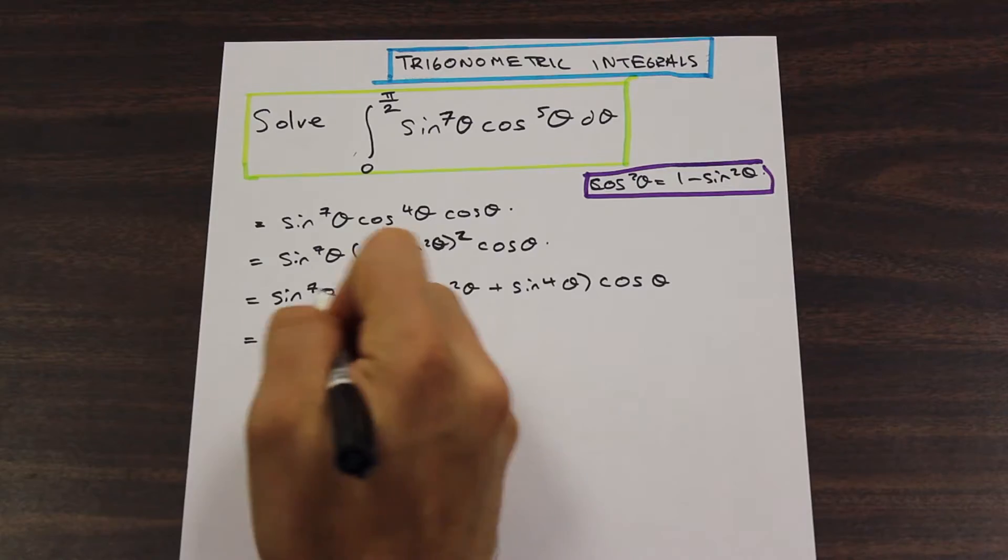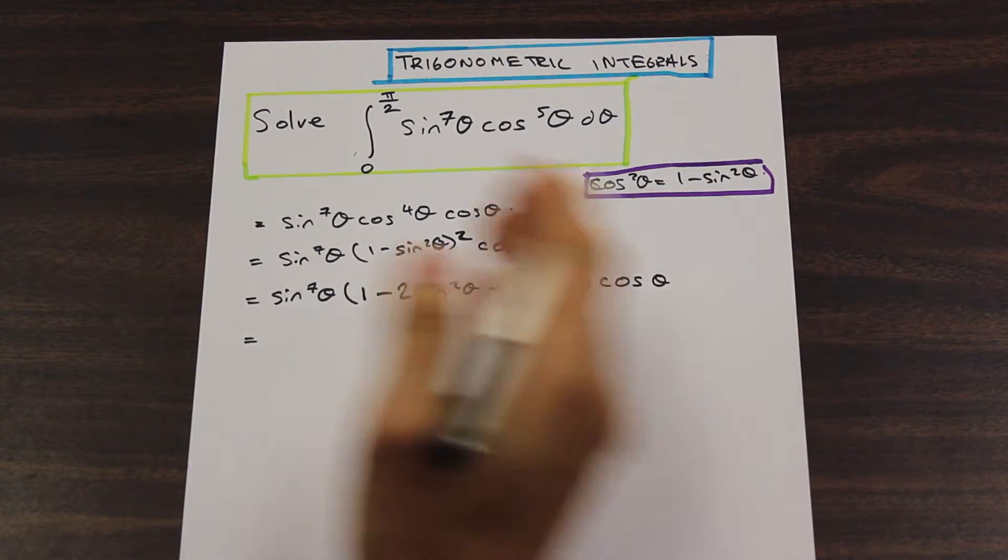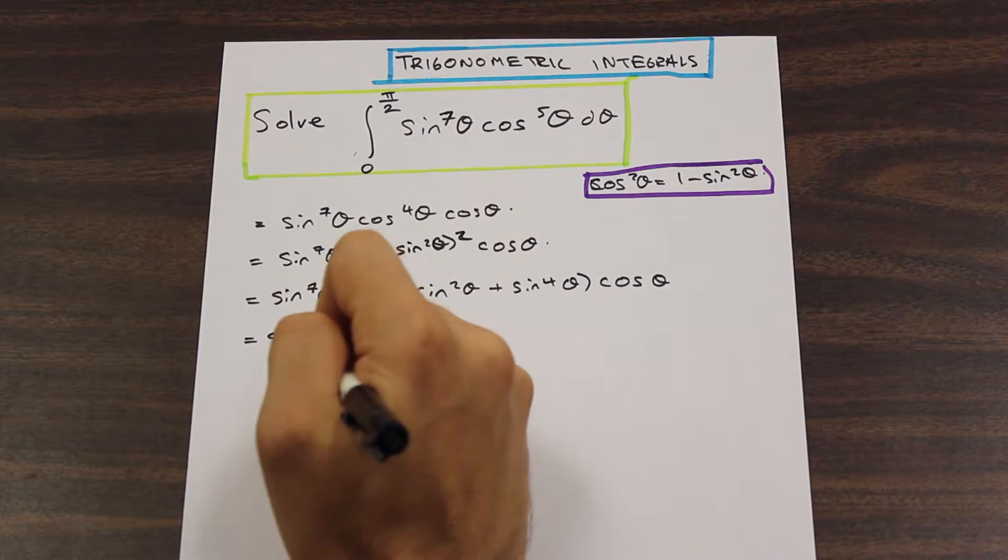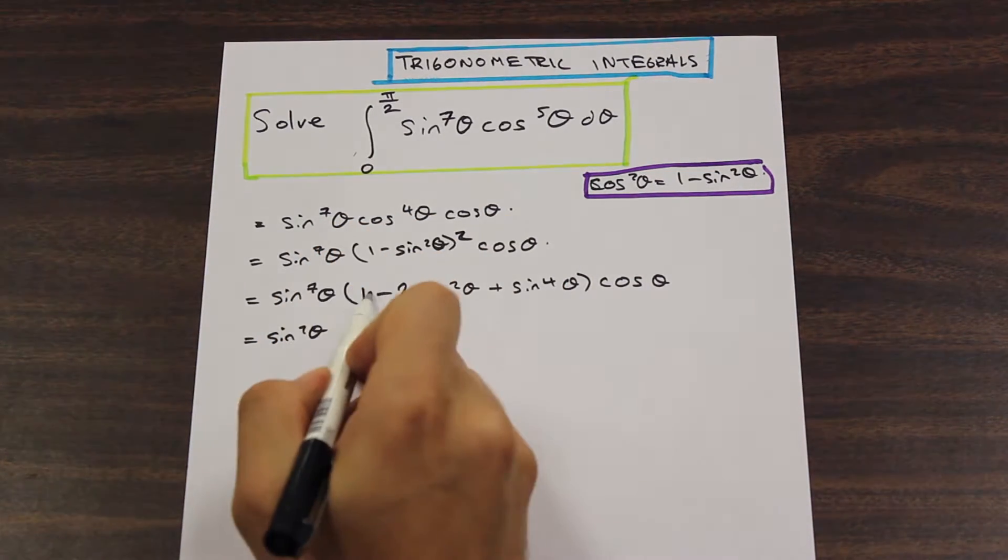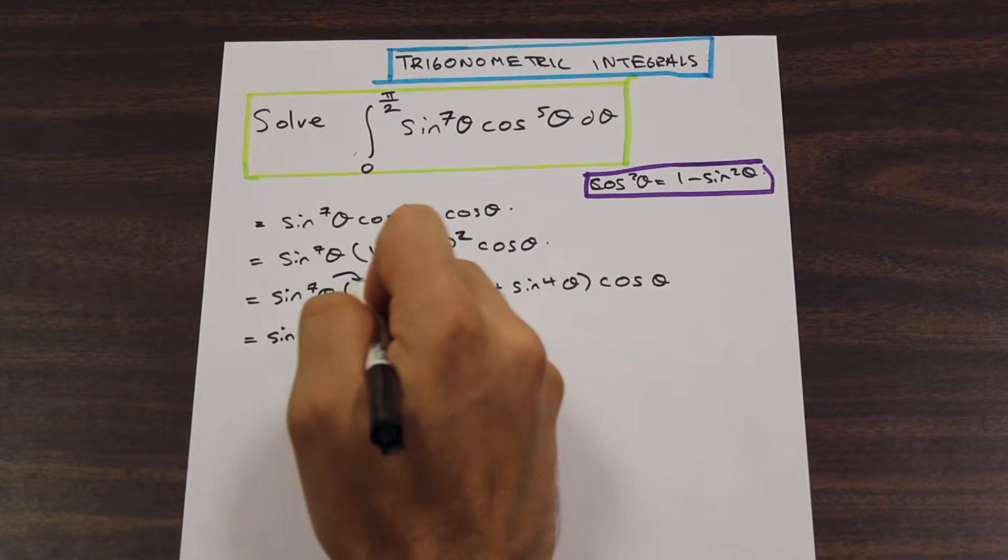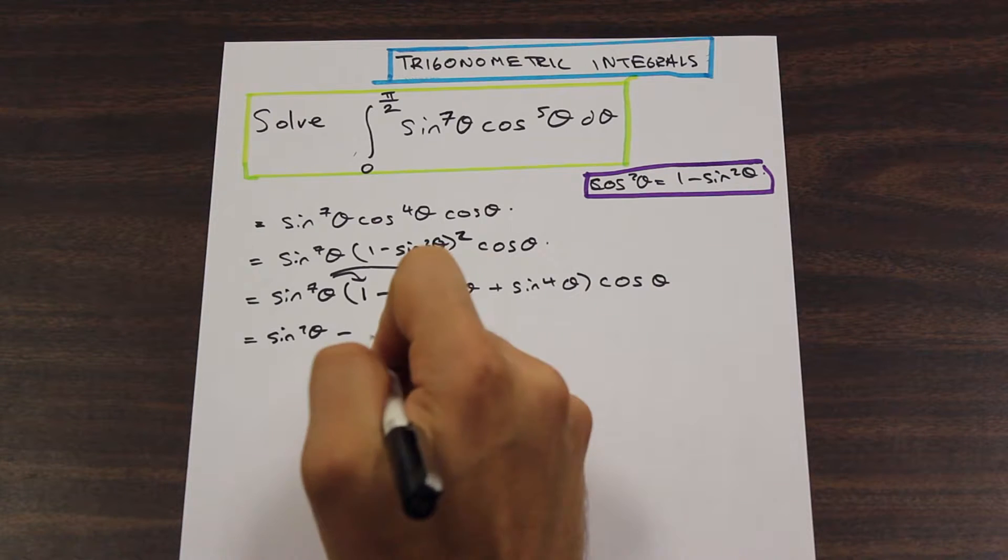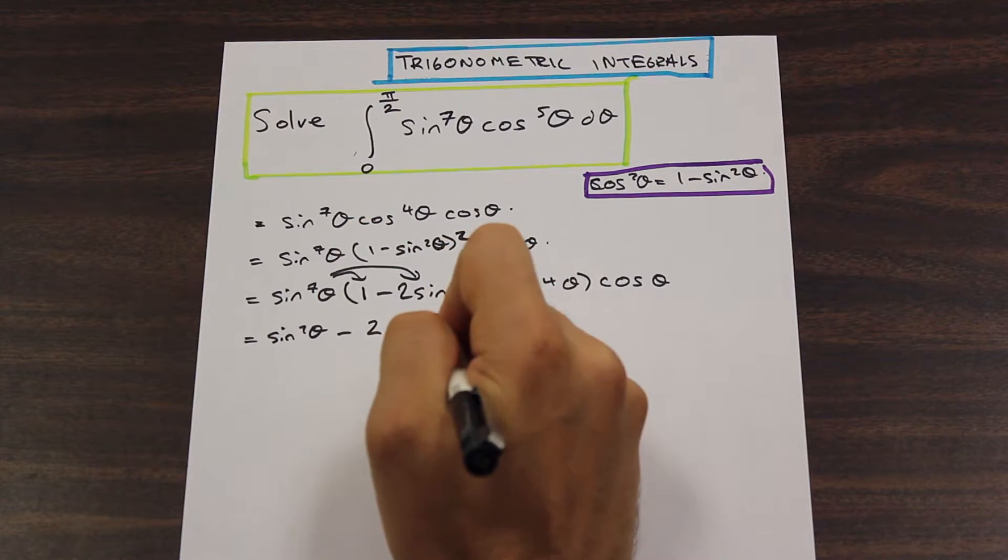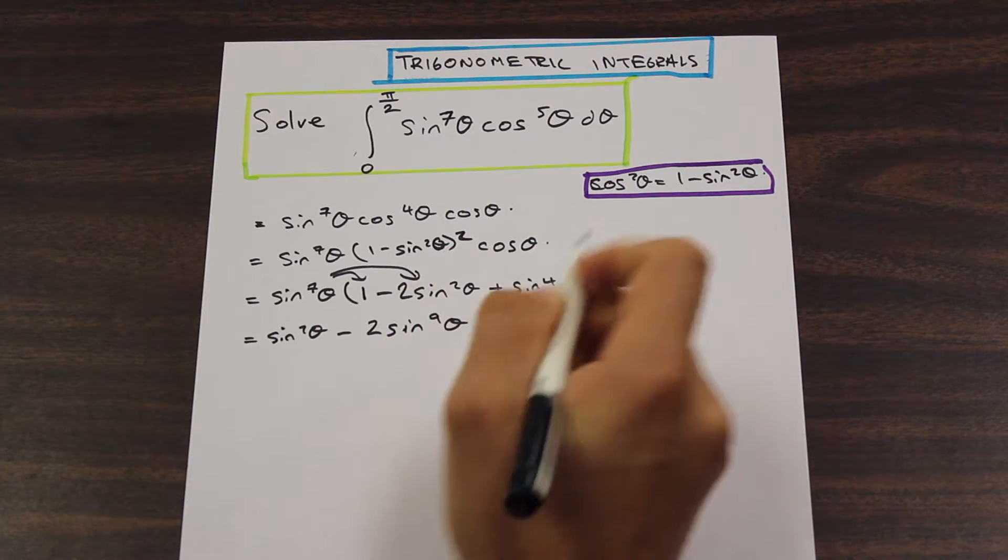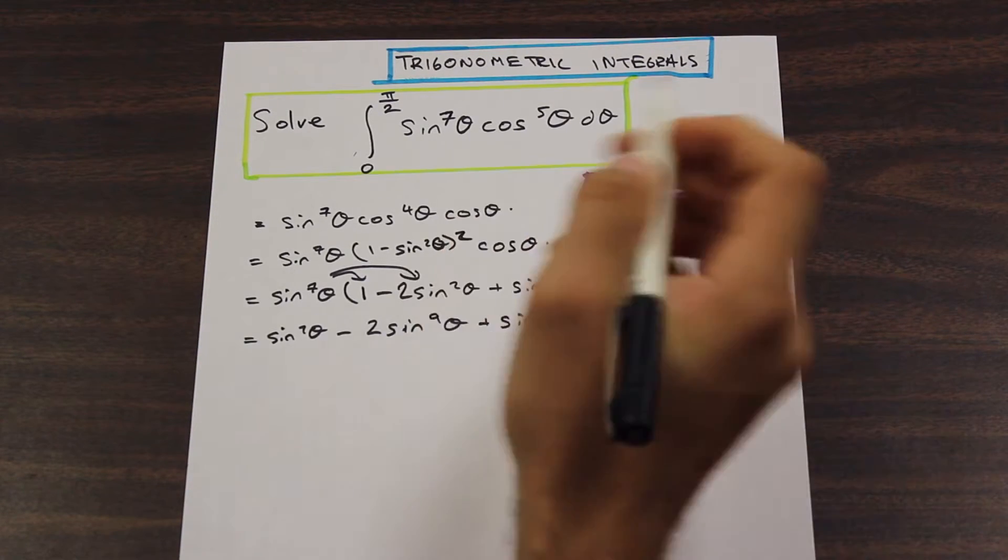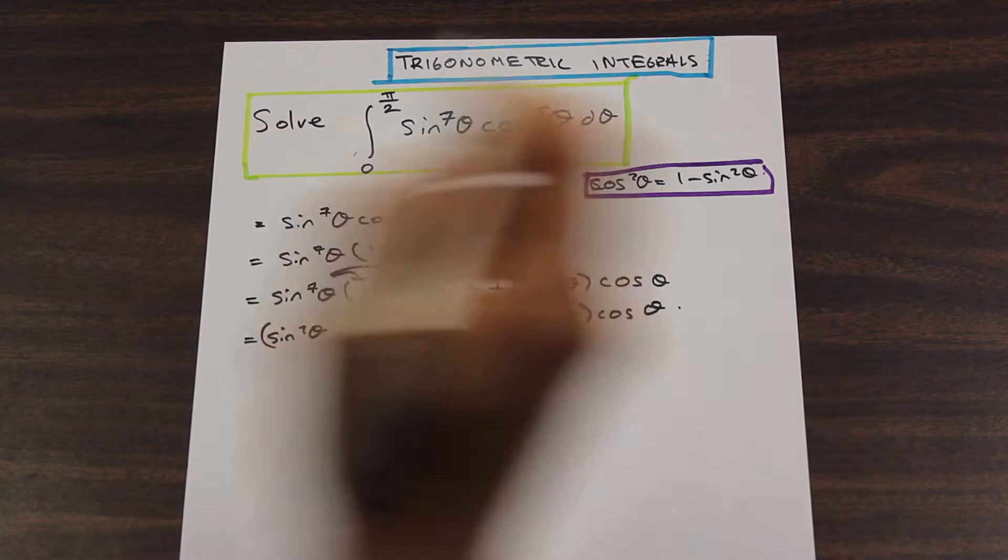Let's go ahead and expand this sine to the 7th theta into this bracket here, so we can have the entire term in terms of sine. We have sine 7th theta, that's just times 1, minus this times this term, so 2 sine, adding the exponents, sine to the 9th theta, plus 7 plus 4 is going to be sine to the 11th theta. And that is all going to be multiplied by cosine theta.